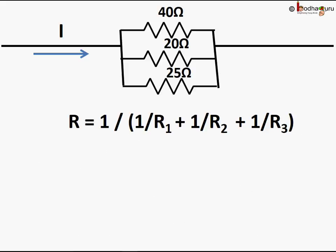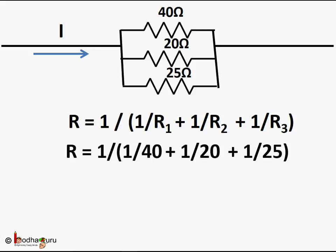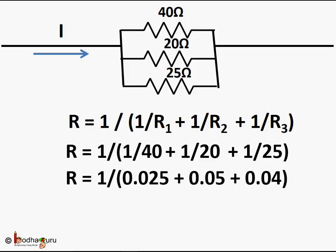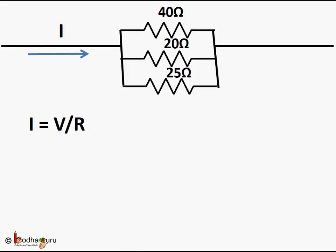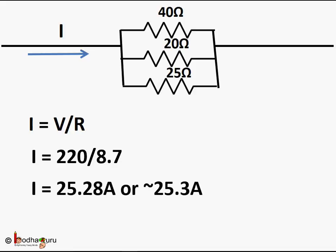Now what is the total resistance of the circuit? R is equal to 1 divided by (1/R1 plus 1/R2 plus 1/R3). Putting in the values: R equals 1 divided by (1/40 plus 1/20 plus 1/25), which becomes 1 divided by (0.025 plus 0.05 plus 0.04), and this comes out to be 1 by 0.115, which is close to 8.7 ohms. So the current through the main circuit I equals 220 divided by 8.7 ohms, which equals 25.3 amps.